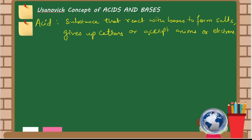Let's see the Usanovich concept of acids and bases. The first theory, in which acid was a giver of H-positive. H-positive is a cation, so this acid donates H-positive. Bronsted said it is a proton donor. Proton is H-positive, so that is also a cation. Lewis said that acid is an acceptor of electron pair.